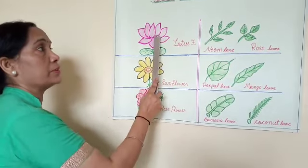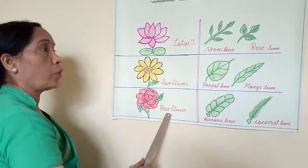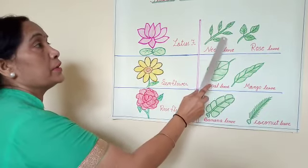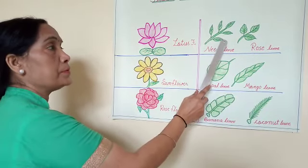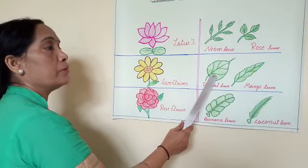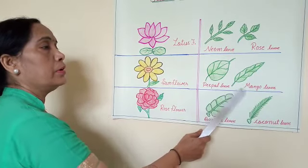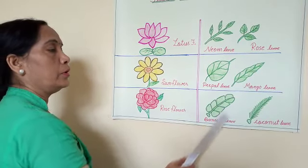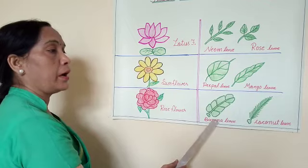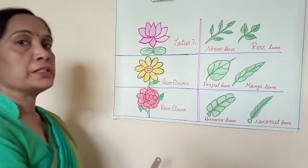Once again: flowers — lotus, sunflowers, rose. Leaves — small leaves: neem, rose. Big leaves: peeple, mango. Very big: banana and coconut.